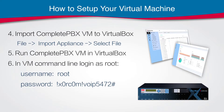Now import the virtual machine file to VirtualBox by going to File > Import Appliance and select the CompletePBX virtual machine file you just downloaded. In VirtualBox you will now see it as a new machine. Double-click on the machine and run it — there is no installation needed.